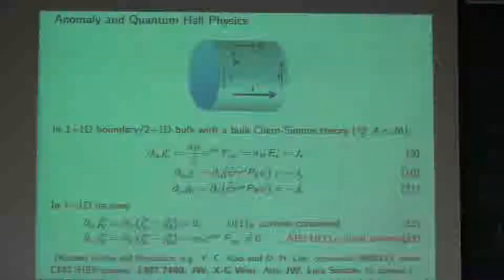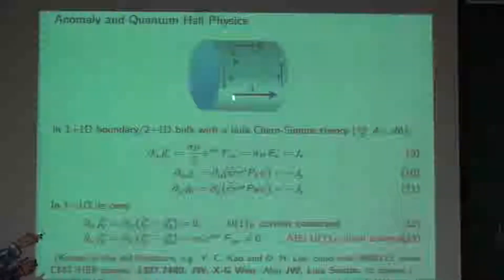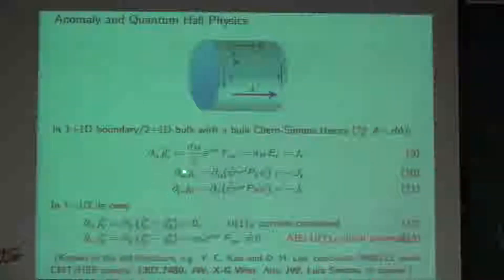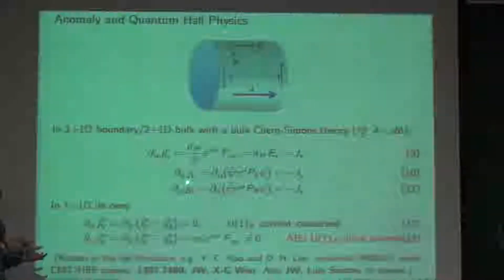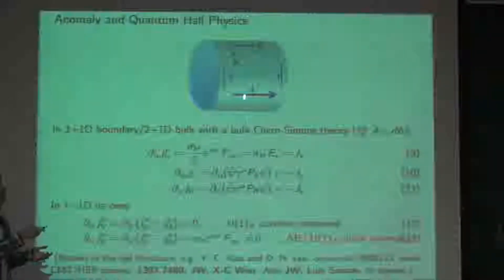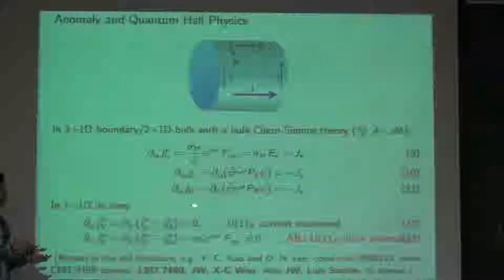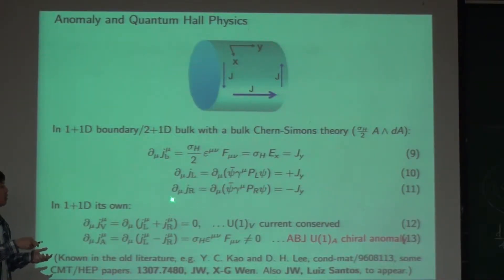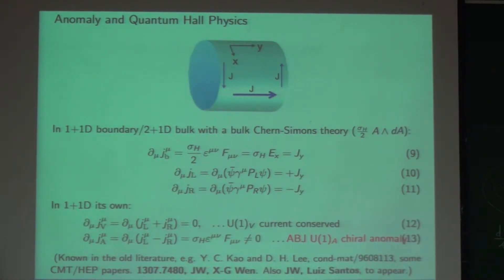If you imagine living in just 1+1 dimensions, what would you see? You would see the edge current on the left edge relating to the current going through the bulk, j_y. Similarly, looking at the right edge, the current there also connects to the one going through the bulk.